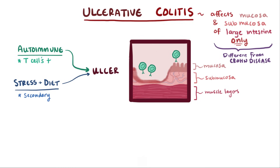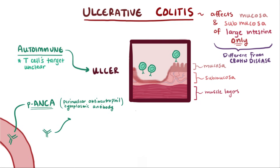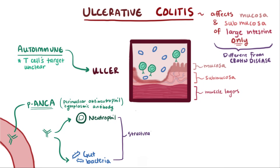It's unclear what exactly these T cells are meant to be targeting. Some patients have P-ANCAs in their blood, or perinuclear antineutrophilic cytoplasmic antibodies, which are antibodies that target antigens in the body's own neutrophils. Although not completely understood, some theories suggest this might be partly due to an immune reaction to gut bacteria that have some structural similarity to our own cells, allowing antibodies to those gut bacteria, or P-ANCAs, to cross-react with neutrophils.